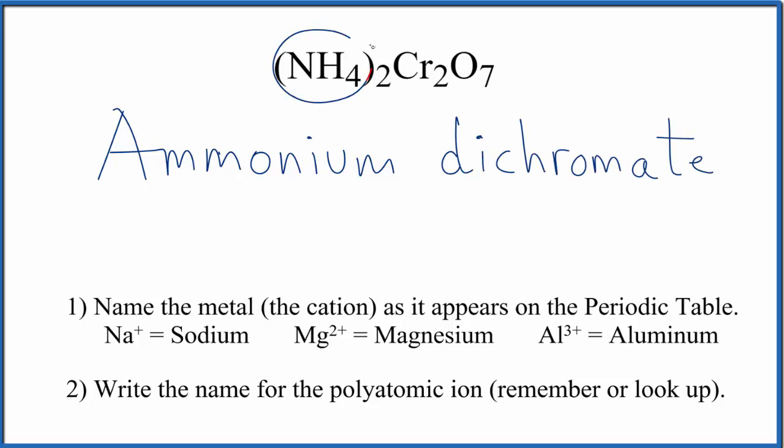And again, either you memorize NH4 as the ammonium ion, and that Cr2O7 is the dichromate ion, or if you're allowed, you look them up on a table of polyatomic ions.